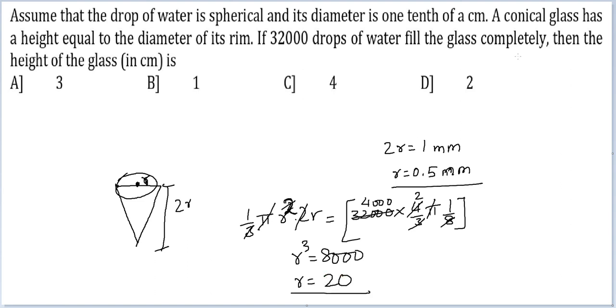Once we've got r equal to 20, pay attention. They have asked me the height of the glass. So height of the glass would be 40, and this is in millimeters right now. Finally the question asks me in centimeters. So the answer will be option C, 4.